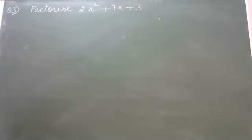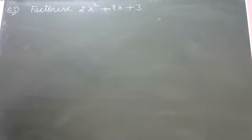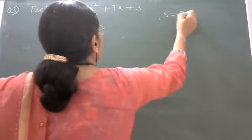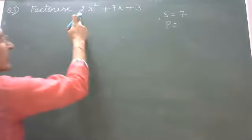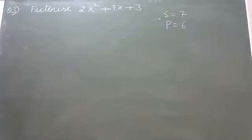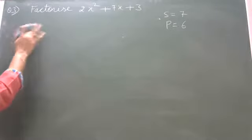Whatever method you like, you can adopt that method. Next: factorize 2x square plus 7x plus 3. Here you need to find a pair of numbers whose sum is 7 and product is AC, that is 2 times 3 equals 6. Write your answer in the chat box.